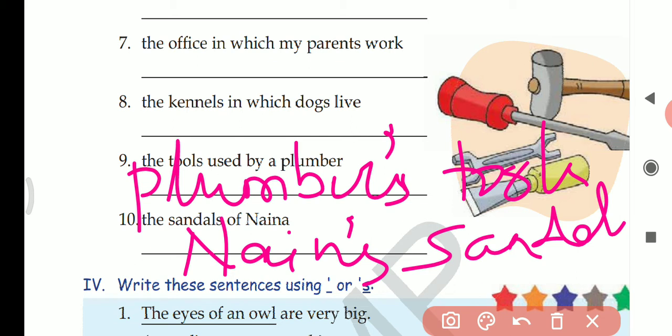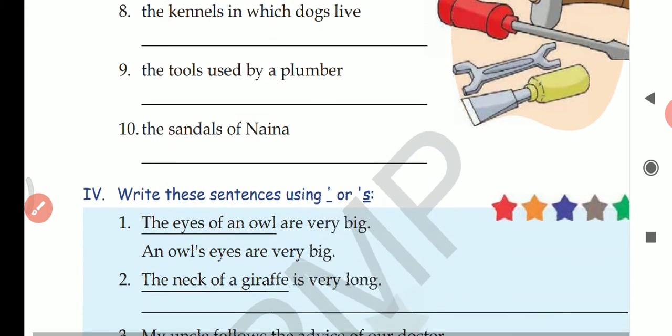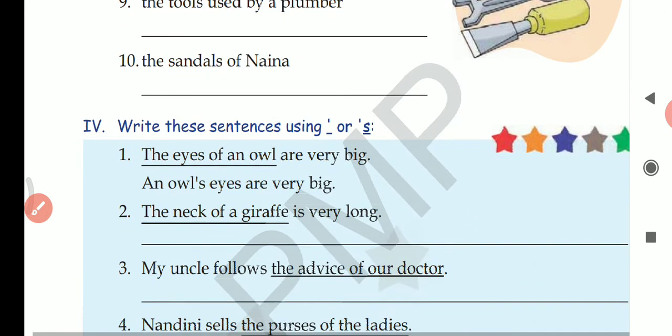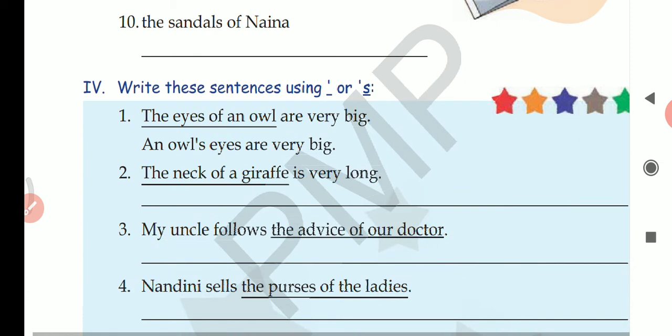I hope question number three is clear to you. On the basis of these two rules, this chapter will be easily solved by you. Next: write these sentences using apostrophe before S or apostrophe after S. Here is question number four.